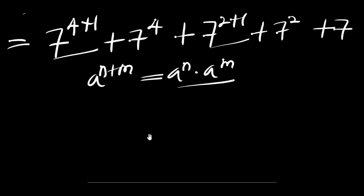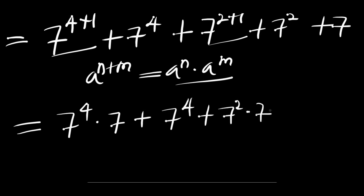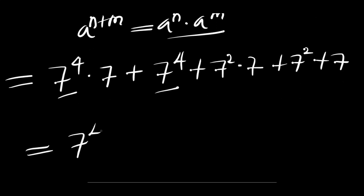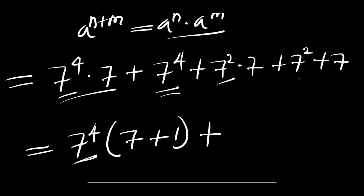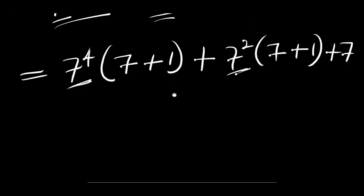So we are going to have 7 power 4 times 7 plus 7 power 4 plus 7 power 2 times 7 plus 7 power 2 plus 7. Now we have some 7 power 4 terms — we can factor that out. That means we are going to have 7 power 4 times, we divide this by 7 power 4, we have 7 plus 1. Then we also have 7 power 2 here and 7 power 2 here, so we factor out 7 power 2 times.